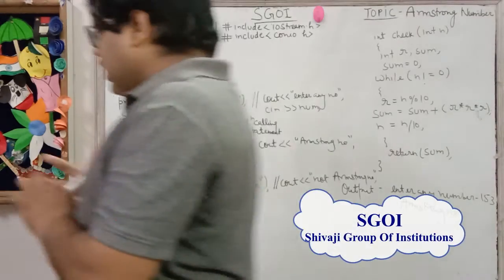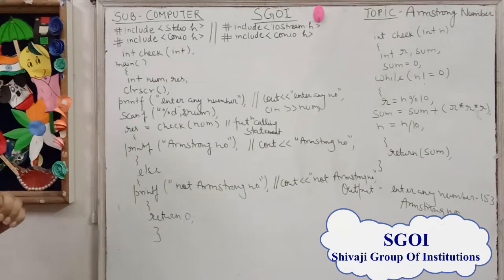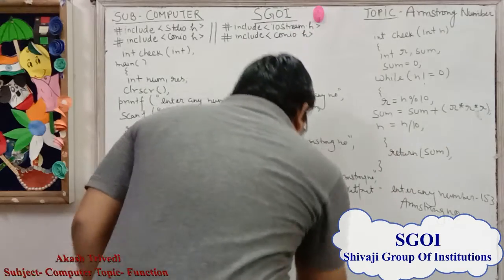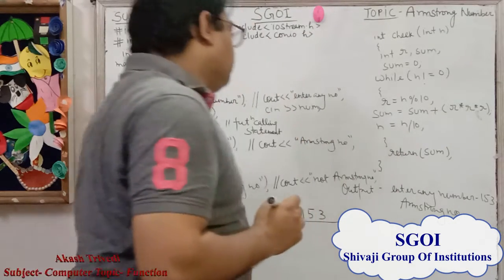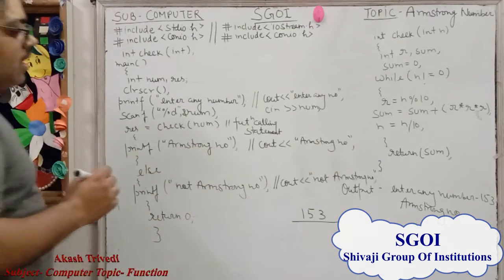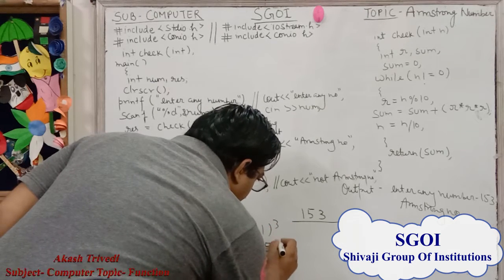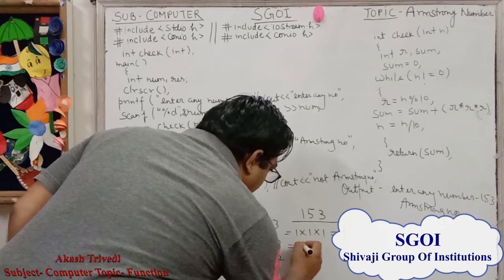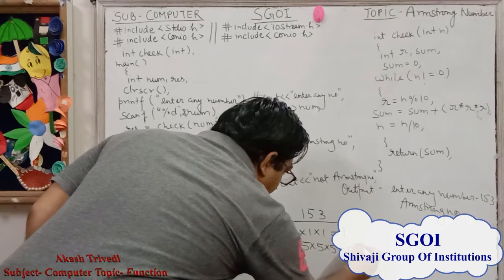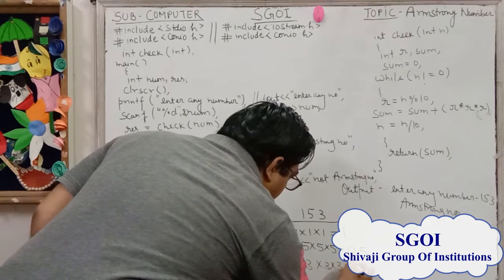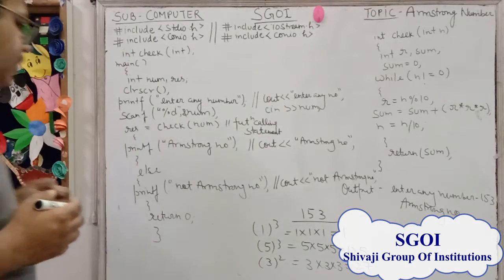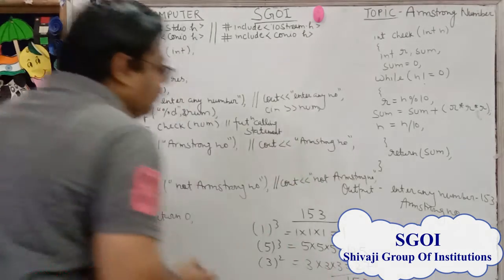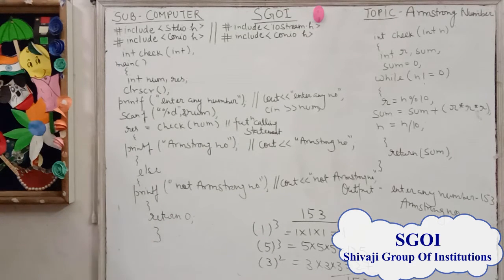If we want to check what is an Armstrong number, firstly we understand which numbers are known as Armstrong numbers. If we know 153 is an Armstrong number, then how do we check it? We find the cube of each digit separately and then add all the cubes. If the sum of the cubes equals the original number, then it is known as an Armstrong number. So, 153 equals 153, and 153 is an Armstrong number.